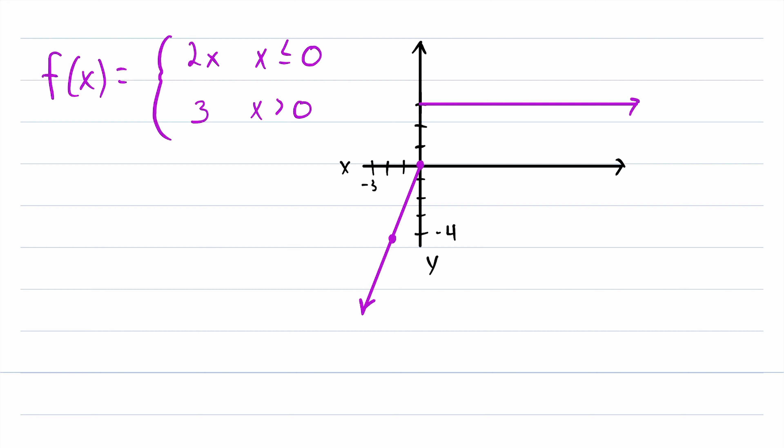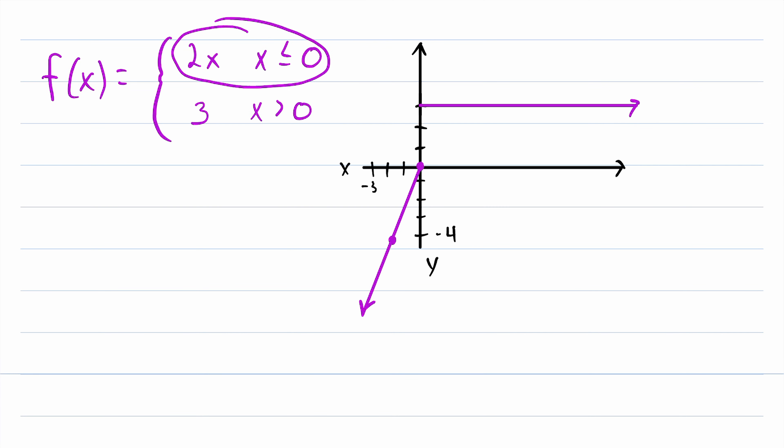We have to pay close attention to these inequalities. Our function is not equal to 3 at x equals 0. Because when x equals 0, this is the rule we have to apply, which would mean that f of 0 is equal to 0. That, of course, is our point at the origin.